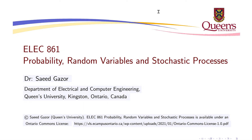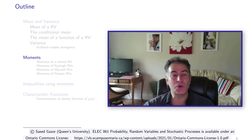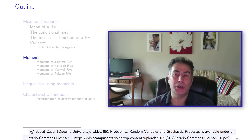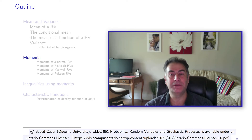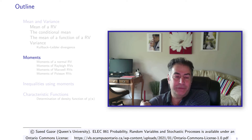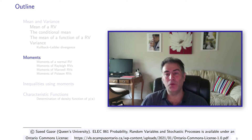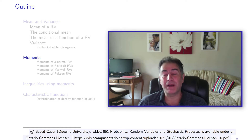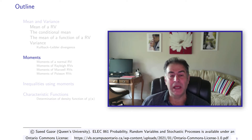In a couple of moments we will start to talk about moments. So far we have defined mean and variance, which are two different moments defined for any distribution. In this video we will define other moments of a random variable.